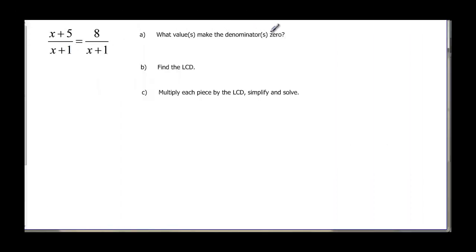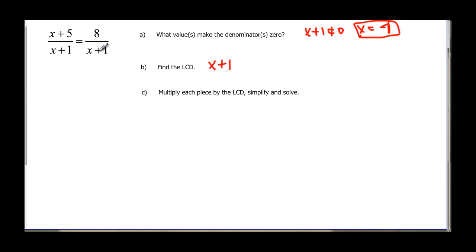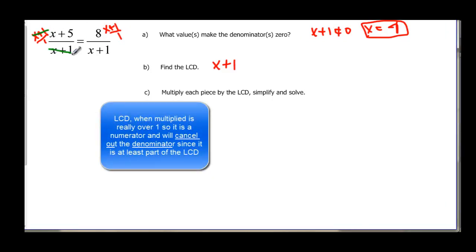So we start here. What values make the denominators zero? Well, that would be x plus one — it can't be zero, so x being negative one would make the denominator zero. The least common denominator in this case is just x plus one because we only have one different denominator. So we want to multiply every term by x plus one. Since those are really like x plus ones over one, the numerator x plus one and the denominator x plus one cancel out, leaving just the x plus five.